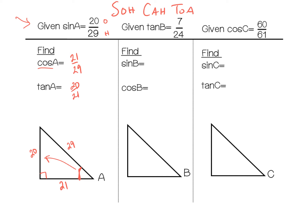The tangent of B is 7 over 24. Tangent is opposite over adjacent, so the opposite side is 7 and the adjacent side is 24. Using the Pythagorean theorem, the hypotenuse is 25. The sine of B is opposite over hypotenuse — 7 over 25. The cosine of B is adjacent over hypotenuse — 24 over 25.